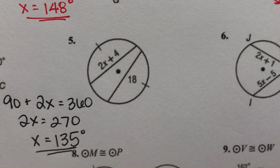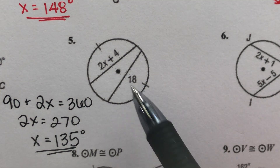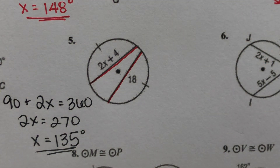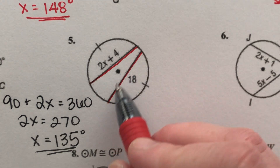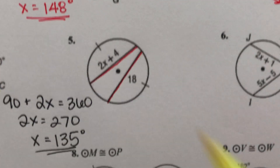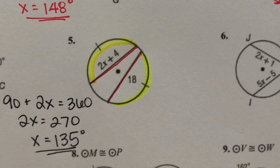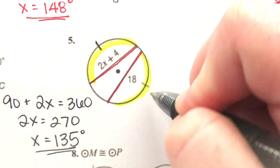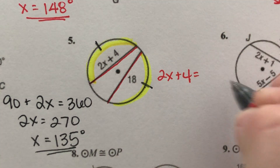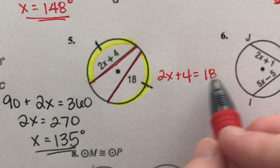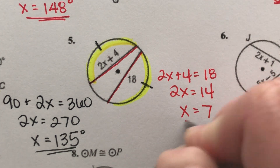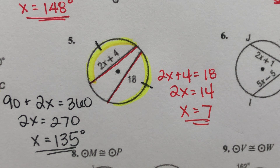Number 5. We've got two chords — they don't say they're equal to each other, but it does tell us the arcs they create are congruent, marked the same. If the arcs are the same, the chords are the same. So we set 2X plus 4 equal to 18. Subtract 4 from both sides: 2X equals 14. Divide by 2: X equals 7.